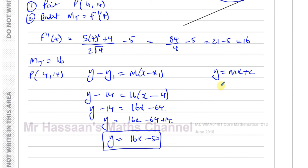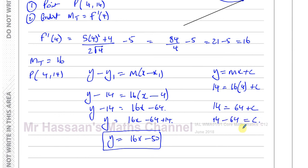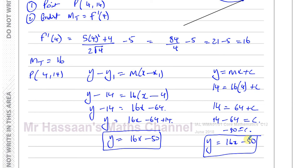Alternatively, using y equals mx plus c: substitute x equals 4, y equals 14, m equals 16. So 14 equals 64 plus c. Taking 64 from both sides: c equals 14 minus 64, which gives negative 50. Therefore y equals 16x minus 50 — the same answer. Both methods work equally well.